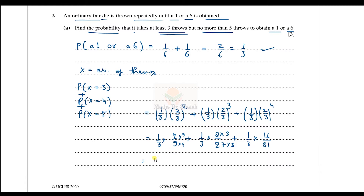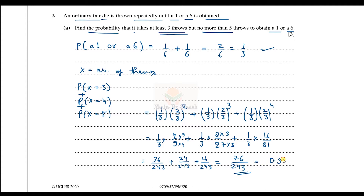Adding these together: 36 + 24 + 16 = 76 over 243. So the probability is 76/243. In decimal, this is approximately 0.3127, which we can write as 0.313. I hope that is clear.